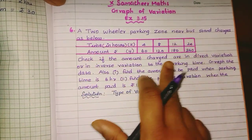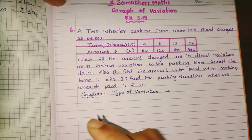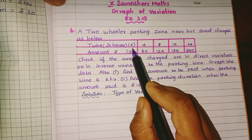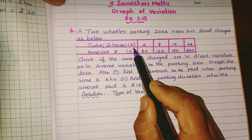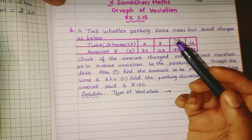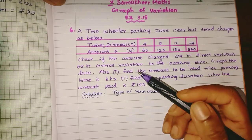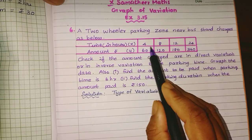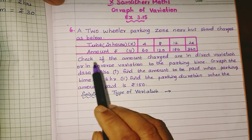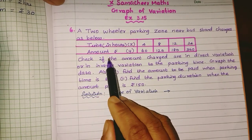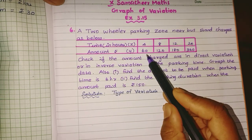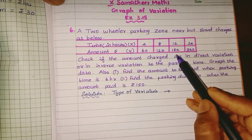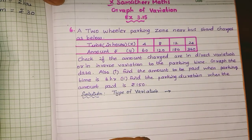In the table, the X column gives time in hours: 4, 8, 12, 24. The Y column gives the amount in rupees: 60, 120, 180, 360.